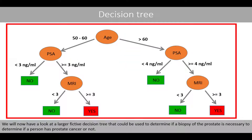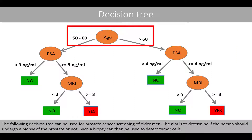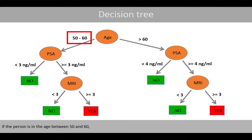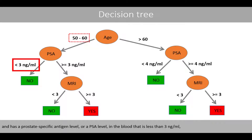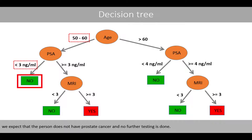We'll now have a look at a larger fictive decision tree that could be used to determine if a biopsy of the prostate is necessary to determine if a person has prostate cancer or not. The following decision tree can be used for prostate cancer screening of older men. The aim is to determine if the person should undergo a biopsy of the prostate or not. Such a biopsy can then be used to detect tumor cells. If the person is in the age between 50 and 60 and has a prostate specific antigen level in the blood that is less than 3 ng per ml, we expect that the person does not have prostate cancer and no further testing is done.